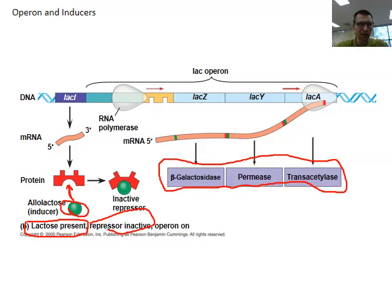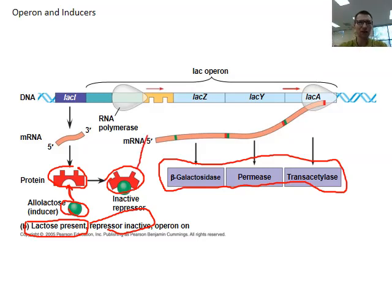The repressor went from a block shape to a curved molecule — lactose just bent it out of shape, so it no longer fits into that section. That allows the gene to be read, RNA to be made, and the protein to be produced. The gene is induced — the switch is turned on.